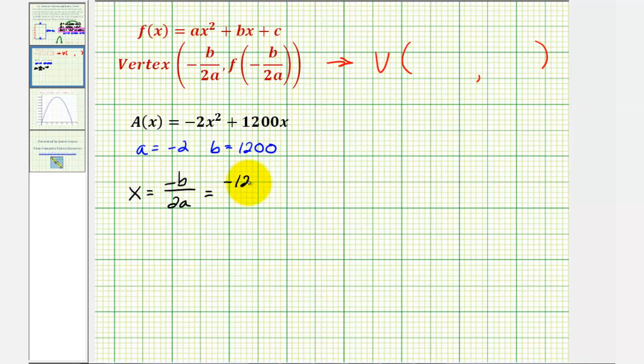So we have negative 1,200 divided by 2 times a, which is negative 2. So this would give us negative 1,200 divided by negative 4, which is equal to 300. So the x-coordinate of the vertex is 300.